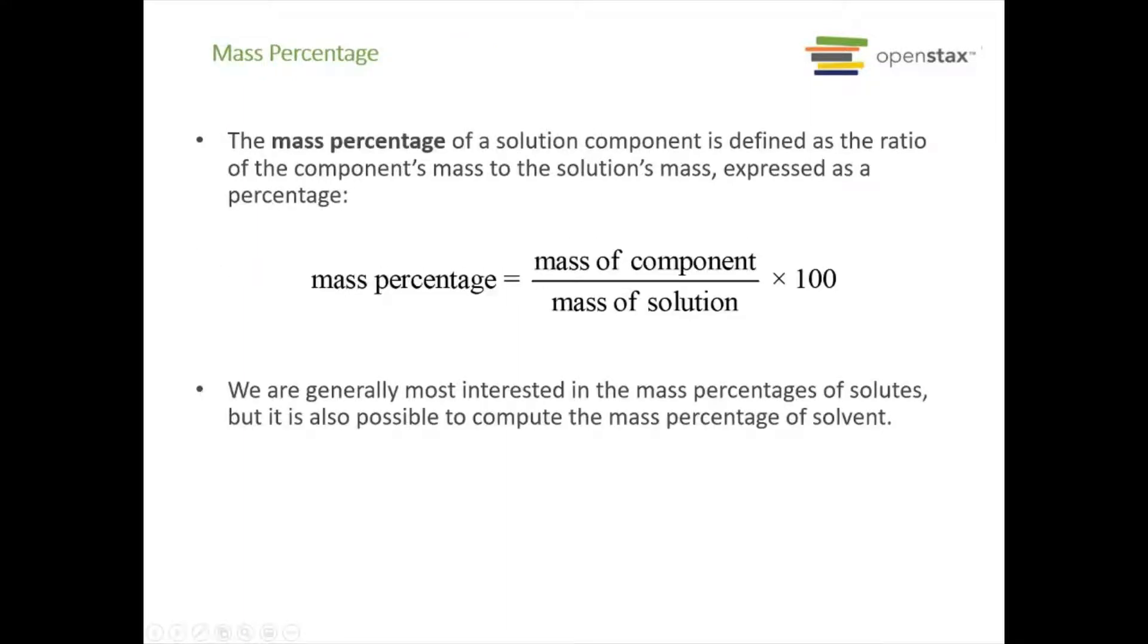We're going to start with mass percentage. The mass percentage of a solution is the ratio of the component's mass to the overall solution's mass as a percentage. A lot of times we're more interested in the mass percentage of a solute, but you can also figure out the mass percentage of solvent. The mass of solution is equal to the mass of your solute plus the mass of your solvent.